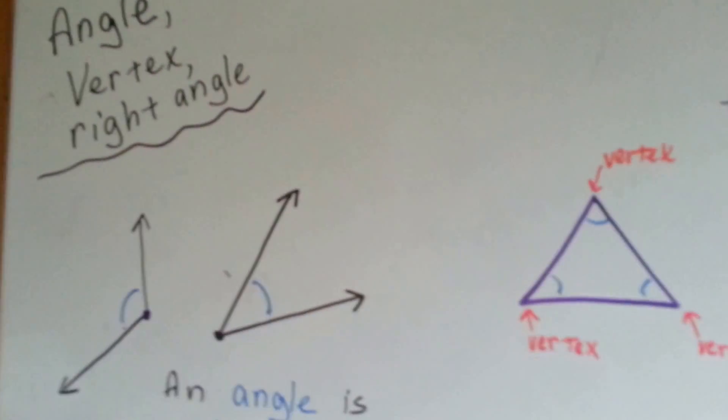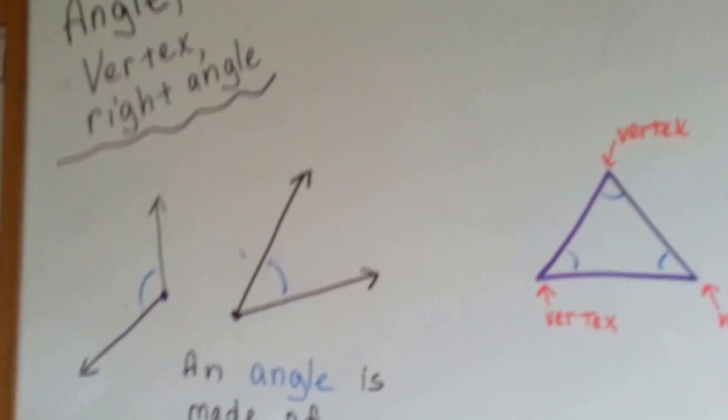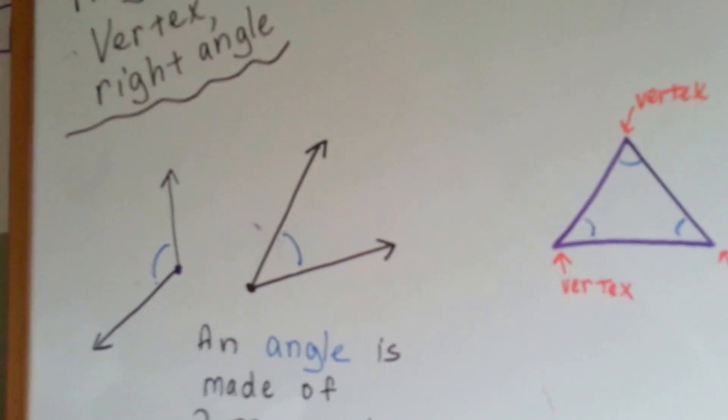So let's see what we're talking about here. We're going to talk about these three things: angle, vertex, and right angle.